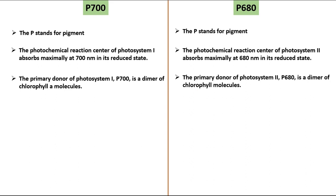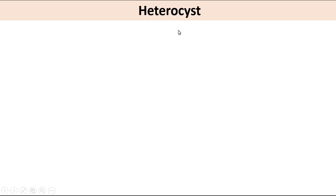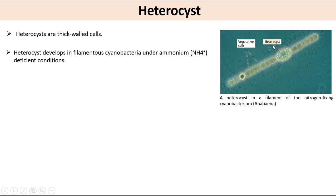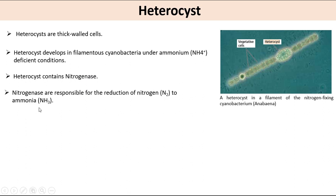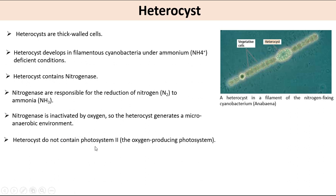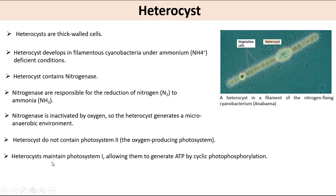Heterocysts are thick-walled cells that develop in filamentous cyanobacteria under ammonium (NH4+)-deficient conditions. They contain nitrogenase and are responsible for the reduction of nitrogen (N2) to ammonia (NH3). Because nitrogenase is inactivated by oxygen, the heterocyst generates a microanaerobic environment. Heterocysts do not contain photosystem II, the oxygen-producing photosystem, but maintain photosystem I, allowing them to generate ATP by cyclic photophosphorylation.